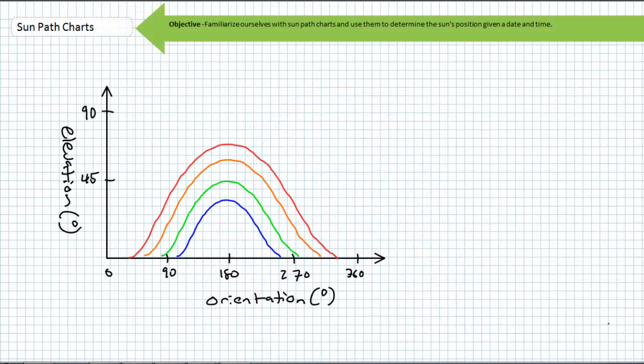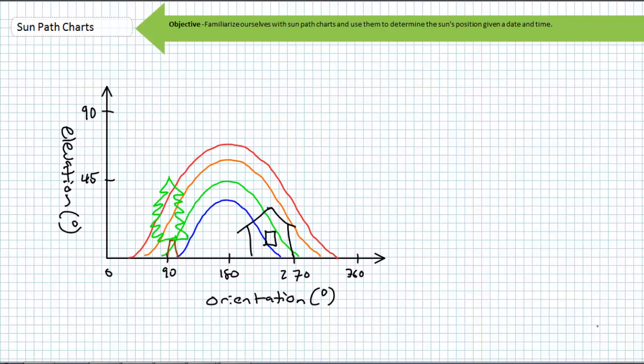Now that we understand what sun path charts are displaying, how to read them, and can use a handy software resource to generate them, let's talk about why we use them. The purpose of a sun path chart is to determine potential shading obstructions in the path of our solar resource at certain times of the year. With a sun path chart for your location, one can visit the site of a potential PV system and observe and measure obstructions superimposed on the sun path chart. Based upon this analysis, one can relocate the system or perhaps remove the obstacles that are causing the obstructions. This is worthy of another lecture entirely and is called shading analysis, a crucial step in solar site analysis.